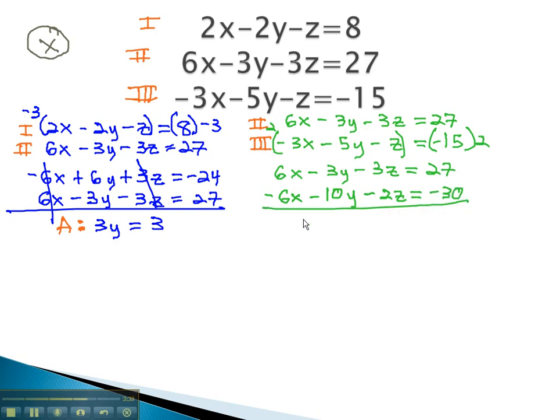Adding those equations together, we get negative 13y minus 5z equals negative 3. We've eliminated the same variable a second time, and so that becomes our equation B.